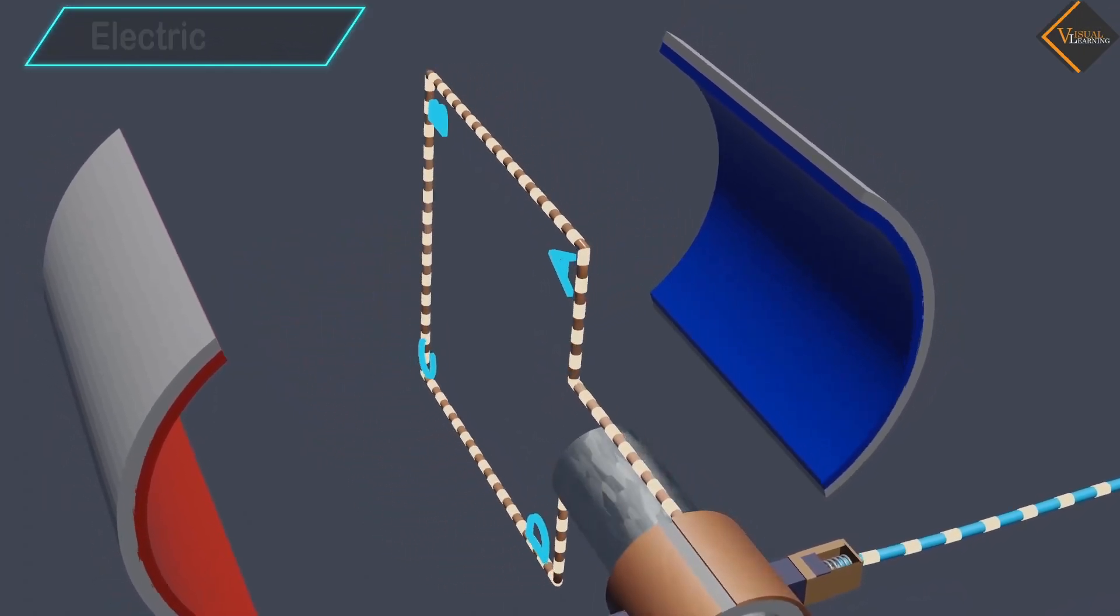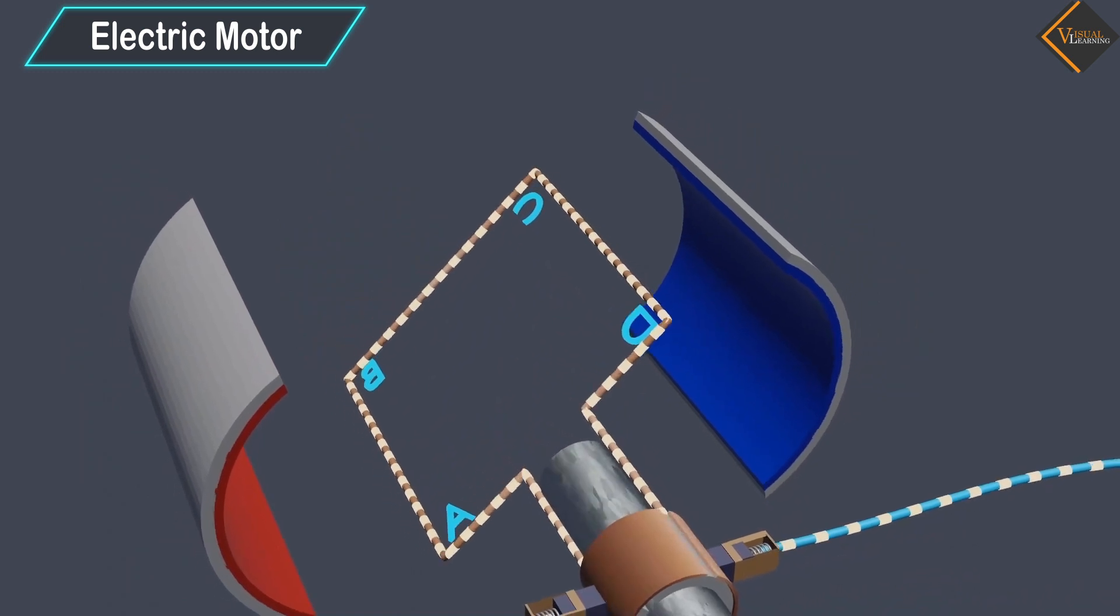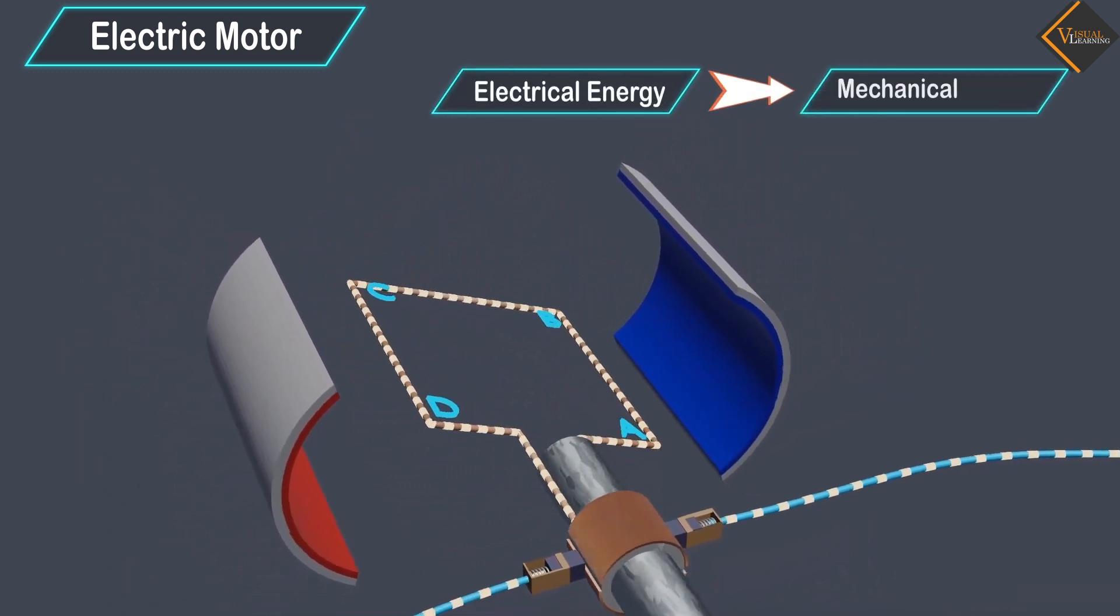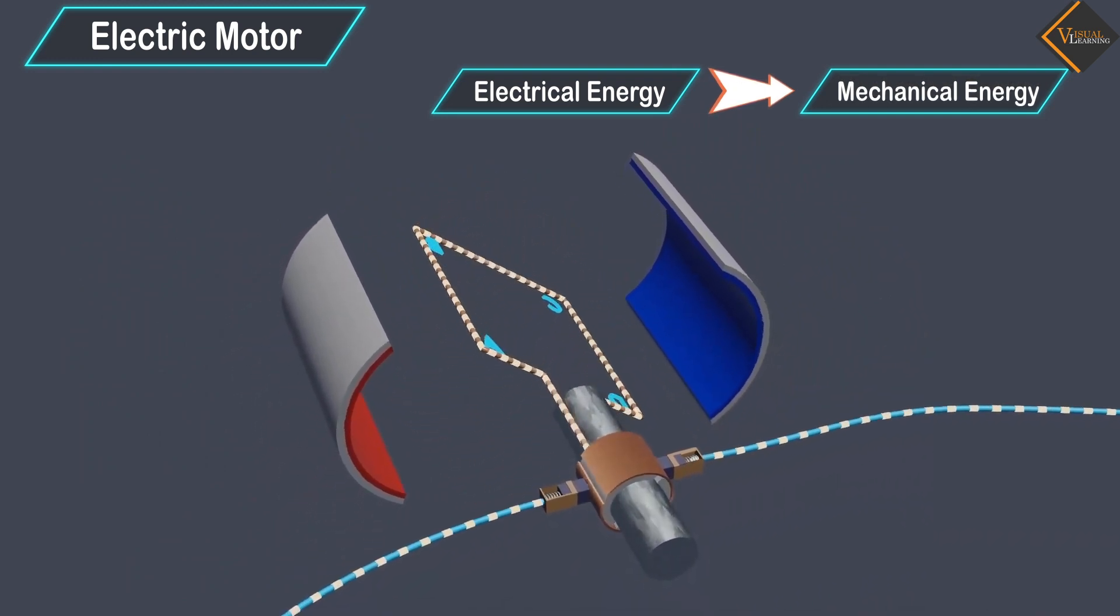In this video, we will understand electric motor. An electric motor is a rotating device that converts electrical energy to mechanical energy. Let's understand how an electric motor works.